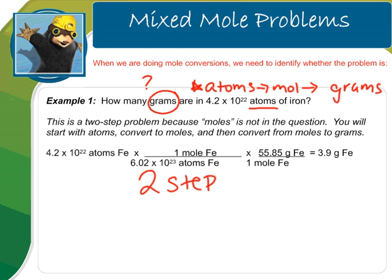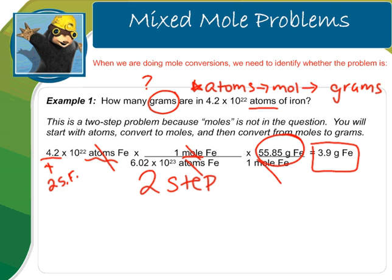Looking at the work, we start with atoms, our units of atoms cancel, and we convert to moles. Then we cannot stop at moles — we go on to solve for grams. So moles cancel and we end up with the unit that we want, which is grams. Then you put all of these steps in your calculator, round to the correct number of sig figs, and you get your final answer.